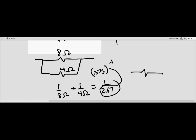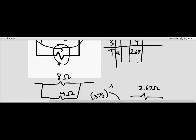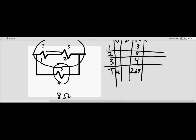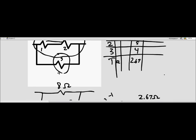We have the total resistance — we can make that single resistor with a total resistance of the entire circuit. That total resistance is 2.67 ohms. From here we find the current. The first equation we're going to use is part of Ohm's law: voltage is equal to the current (represented by I) times the resistance. Since we have the voltage and the resistance, we can find the current by just dividing voltage by resistance.